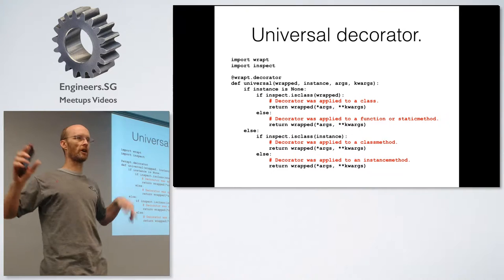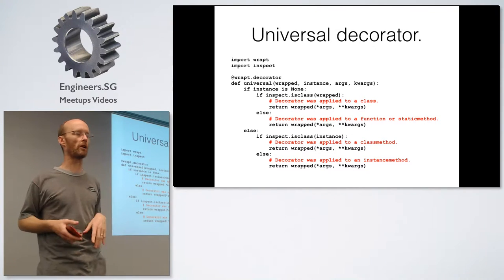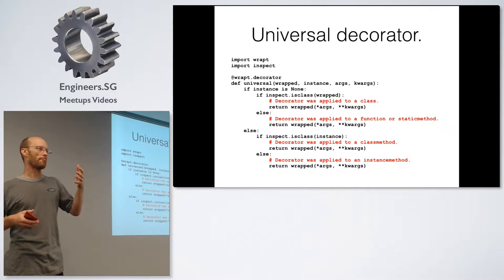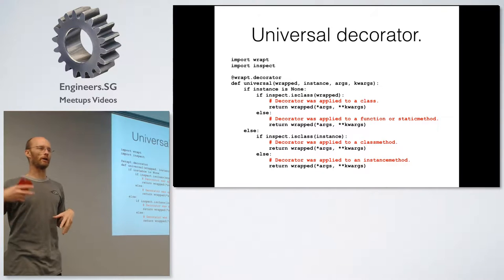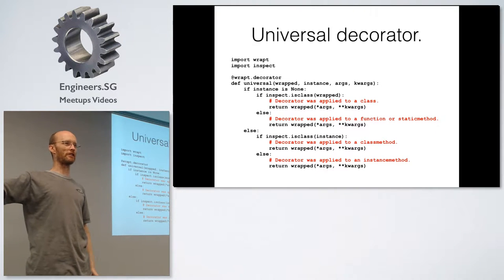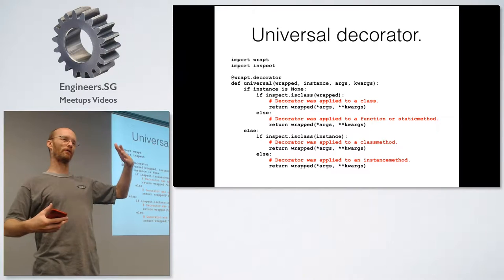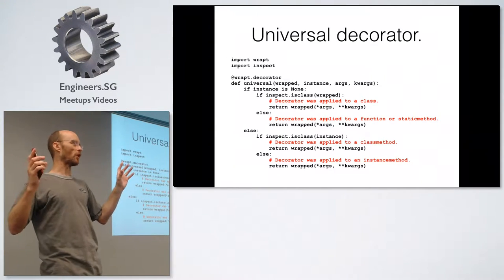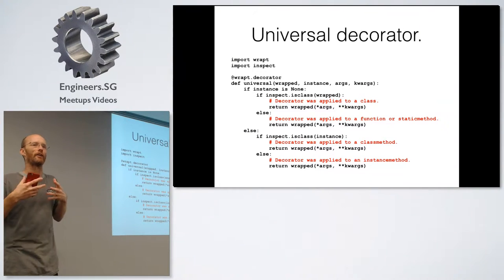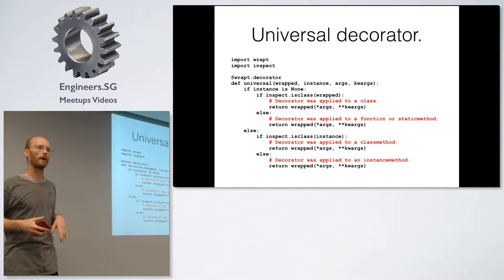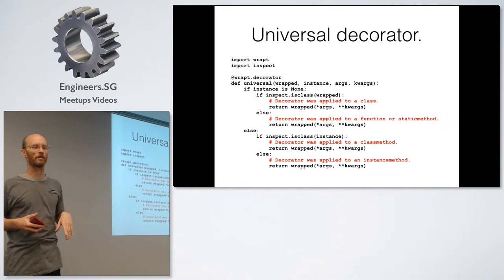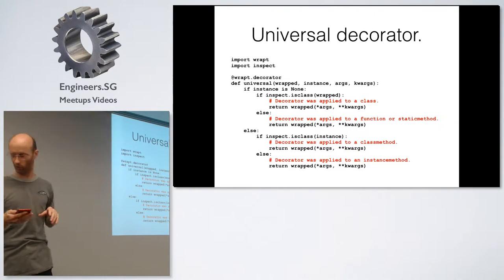You can tell whether a decorator is being applied to a class, a function or static method, a class method, or an instance method. That's very important if you want to write a decorator that can be used in different scenarios and dynamically adjust. For example, Django has decorators where there are two versions — one you apply to a normal function and a different one for an instance method — because they haven't got the smarts to let their decorator implementation pick up in what context it's used. Wrapped handles that. That's what I call 'universal decorators.'